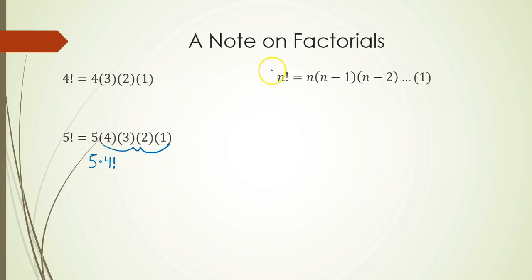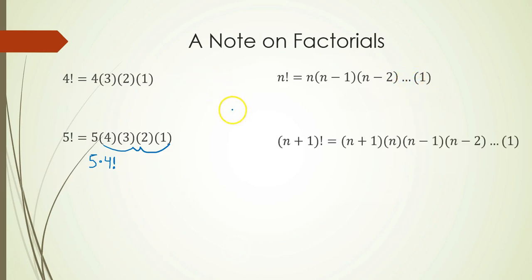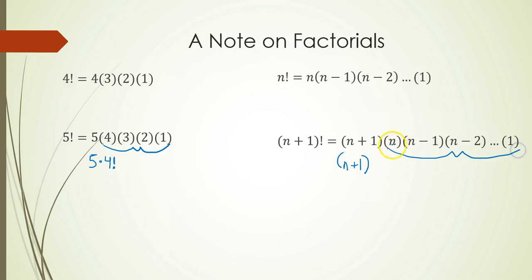In general, this means n factorial is n times n minus 1 times n minus 2, all the way down to 1. So n plus 1 factorial would be n plus 1, times n, times n minus 1, times n minus 2, all the way down to 1. Equivalently, we can write this as the first factor n plus 1, and then group everything else together — that's what n factorial is. We need this trick of writing out the first factor whenever we're using the ratio test.